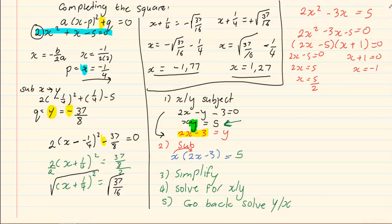So, in this case, we are going to go back to 2x minus 3 is equal to y. We are going to substitute the 5 over 2 and the minus 1 into x to get y.